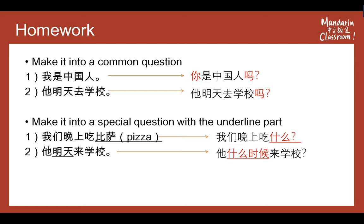And let's see the second part: make it into a special question with the underlined part. First one: 我们晚上吃披萨。 Here, 吃披萨 — the special question word is 'what.' So the question is: 我们晚上吃什么？ We only need to change that part into the special question word. And the second: 她明天来学校。 Here we have to use the special question word for 'when.' When in Chinese is 什么时候。 So the question will be: 她什么时候来学校？ We only need to change the part into the special question word to make the special question.